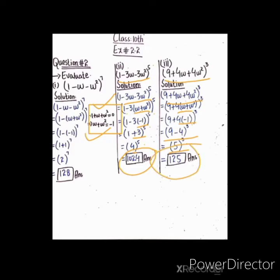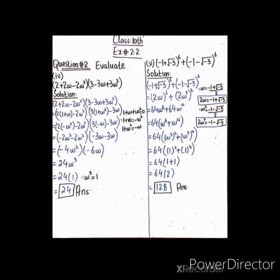Next part number 4: (2 + 2ω - 2ω²)(3 - 3ω + 3ω²)۔ پہلے expression میں 2 اور 2ω سے 2 common لیں، اندر (1 + ω) رہے گا۔ میں نے 2ω اور -2ω² میں سے 2 common اس لیے نہیں لیا کیونکہ اندر (ω - ω²) بنتا اور ω - ω² کسی property میں use نہیں ہوا۔ ہم نے (ω + ω²) = -1 پڑھا ہے، جبکہ (1 + ω + ω²) = 0۔